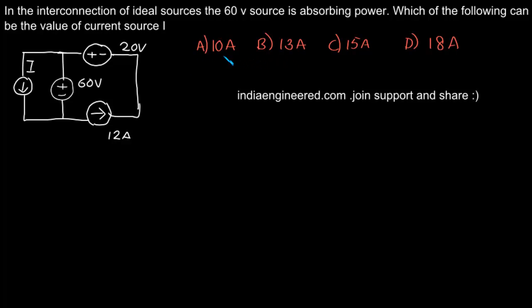Now the information apart from the circuit is the 60 volt source is absorbing power. If you have a voltage source normally it delivers power - then what happens, the current flows from positive terminal to negative terminal. This is the direction of current from the source when it is delivering power. Now when it is absorbing power, what happens? The current flows in opposite direction. So this is the information that we have to know.